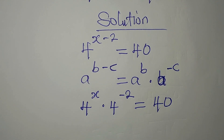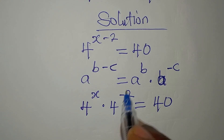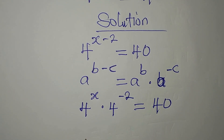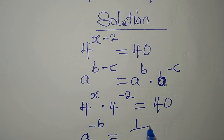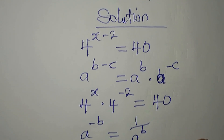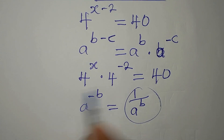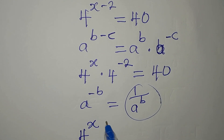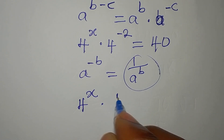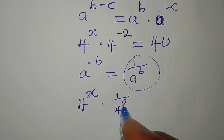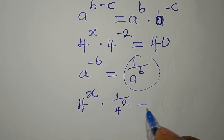Now, if you have a to the power of negative b, this will be the same thing as 1 over a to the power of b — the negative produces this fraction. So here I have 4 to the power of x, multiplied by 1 over 4 to the power of 2, and this is equal to 40.